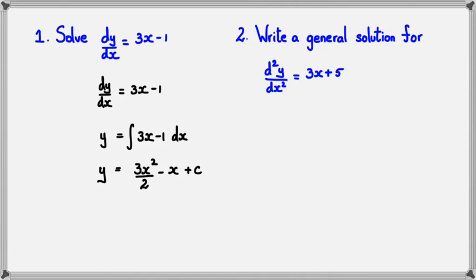So here's a second example. Write a general solution for d squared y over dx squared equals 3x plus 5. Now I know that this is a function of Y that has been differentiated twice.